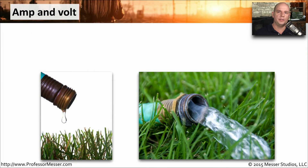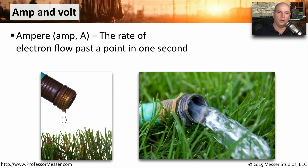When you're working with power inside of a computer, you'll probably hear the terms amps, volts, and watts. An amp is an ampere, also abbreviated as the letter A. This is a measurement of how many electrons will flow past a particular point in a single second.